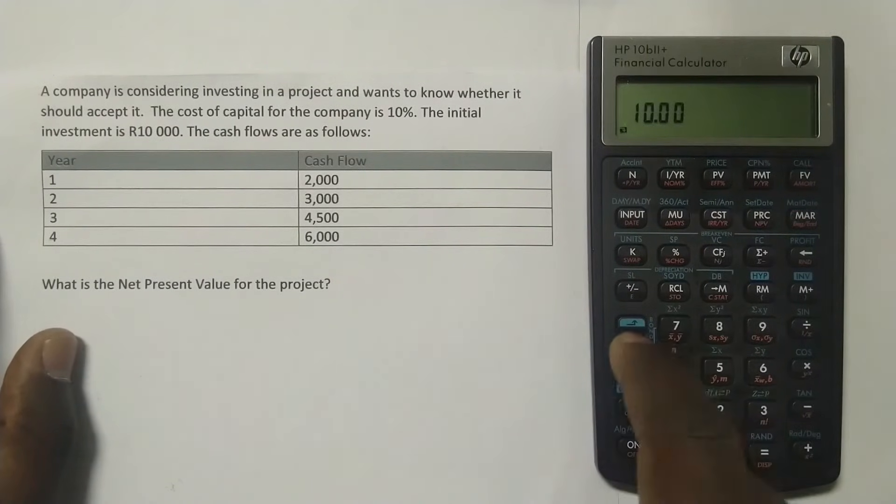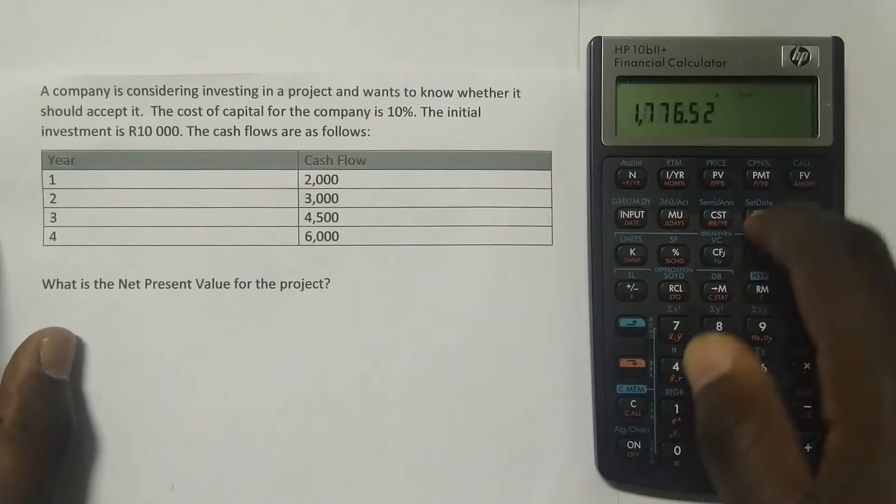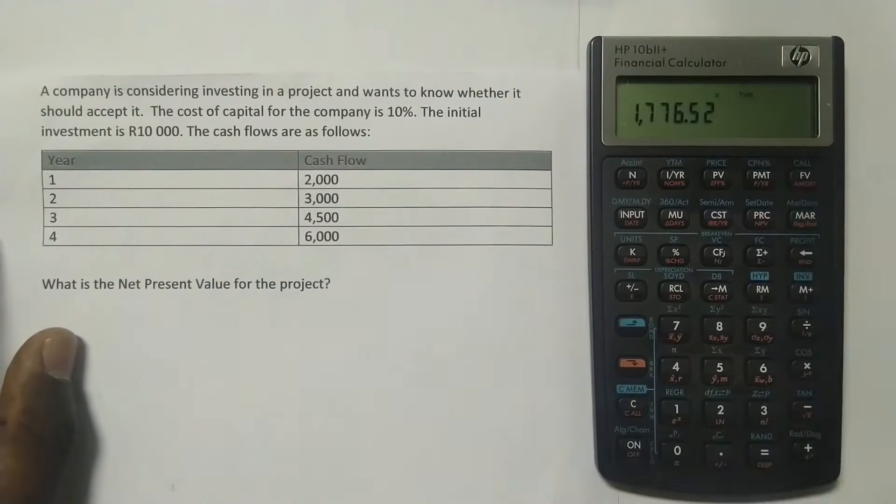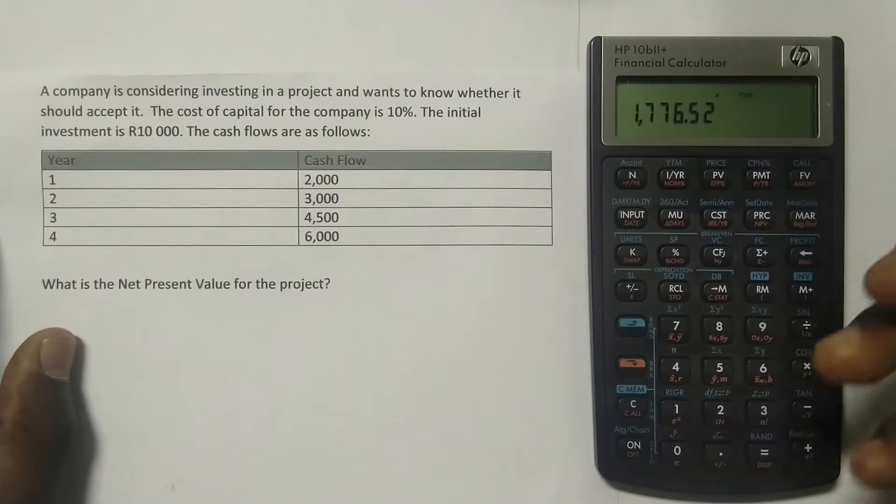So you just press the orange button, and then you press here, it's written PRC. You can see underneath it's written NPV. And there we have it. The net present value is a positive 1,776 rand, 52 cents.